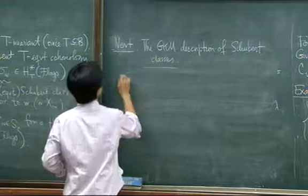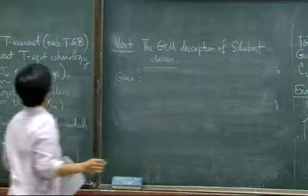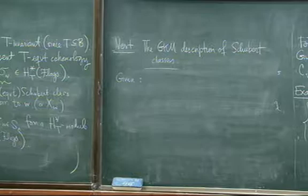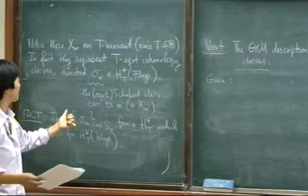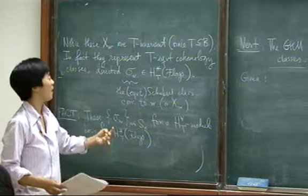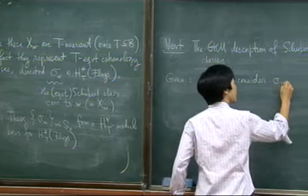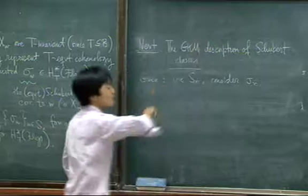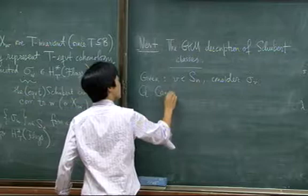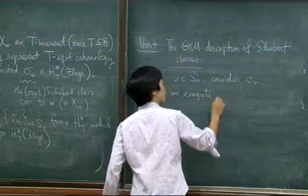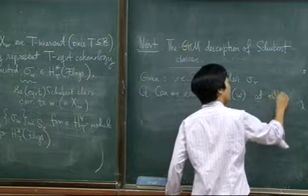I apologize for change in notation. But now we're going to have two different SNs interacting. One labels the Schubert classes, and the other one labels the fixed points. So I'm going to slightly change notation. Given V in SN, consider the Schubert class sigma of V. And then, when I say the GKM description of Schubert classes, of course, what I mean is the following. Now, the question is, can we compute sigma sub V at W, at all W in SN?